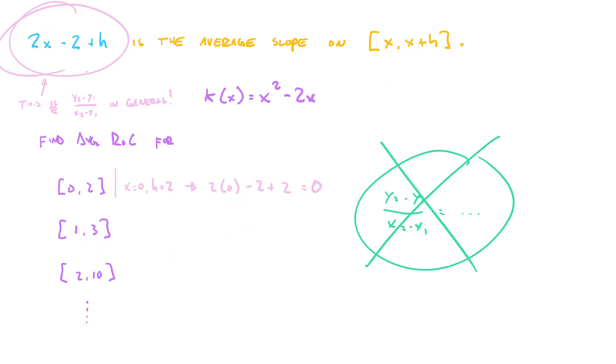So okay, in the first one, x is 0. h is 2. So we have 2 times 0 minus 2 plus 2 because h is 2. So that's 0. Negative 2 plus 2, that's 0. So 0 is the average rate of change on 0 to 2. No need to do y2 minus y1 over x2 minus x1 because we already did it. That's what the difference quotient is.